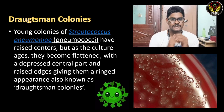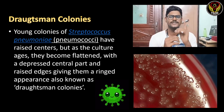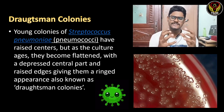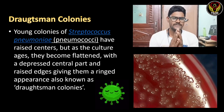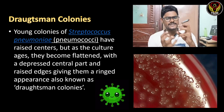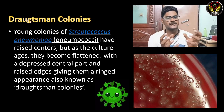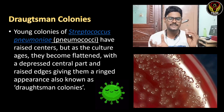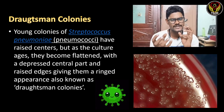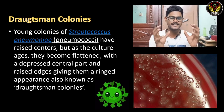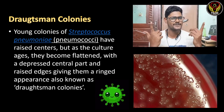Apart from these nine parameters, there are various other colony morphology types. One is Draughtsman colonies, specific to Streptococcus pneumoniae or pneumococci. In young cultures, the centers are raised, but as the culture ages the colonies become flattened with a depressed central part and raised edges, giving them a ring-like appearance.